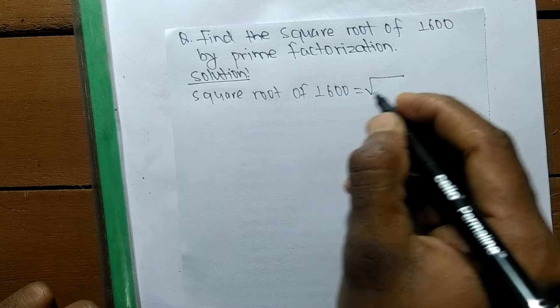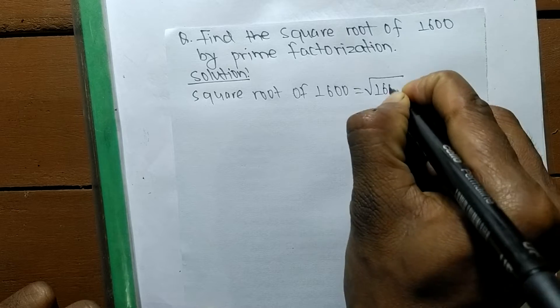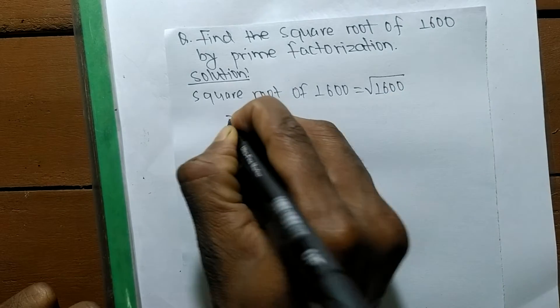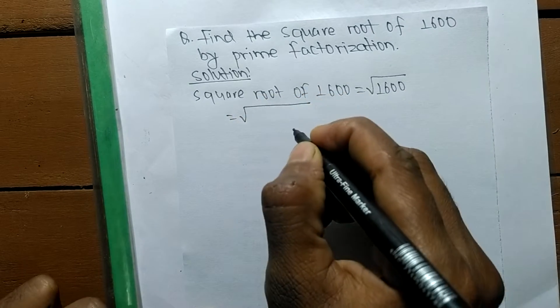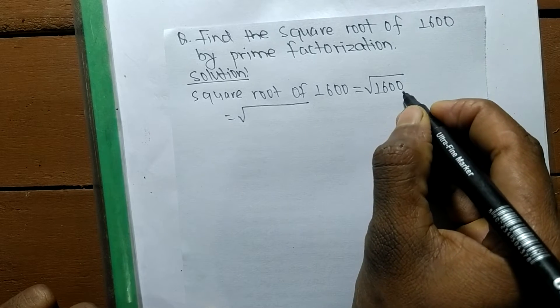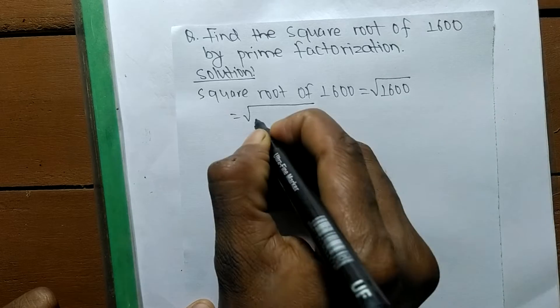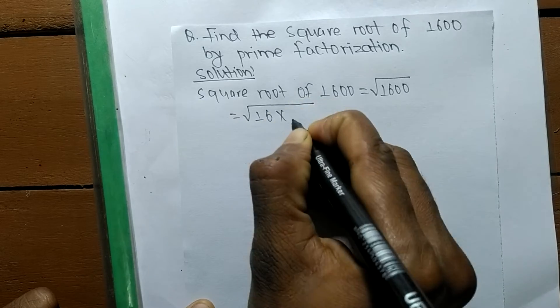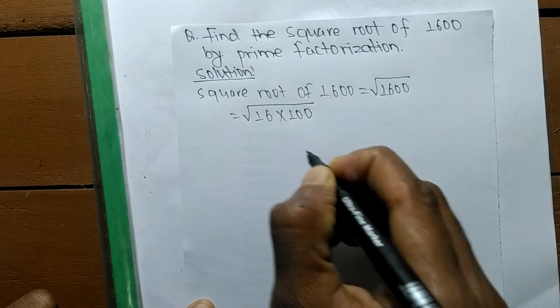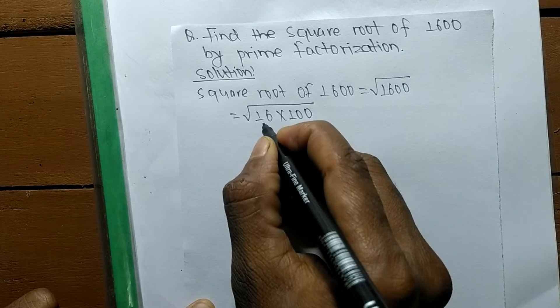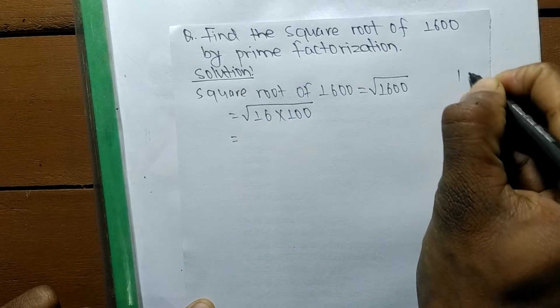When a number contains zeros, we have to separate the numbers and zeros separately. The number is 16 and the remaining is 100. The prime factors of 16 are 2 times 8.